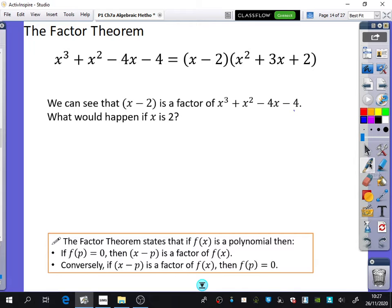So, if f of x is x cubed plus x squared minus 4x minus 4, then f of 2 would be equal to 0.